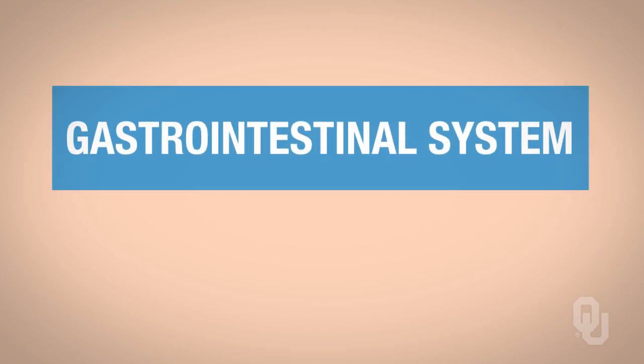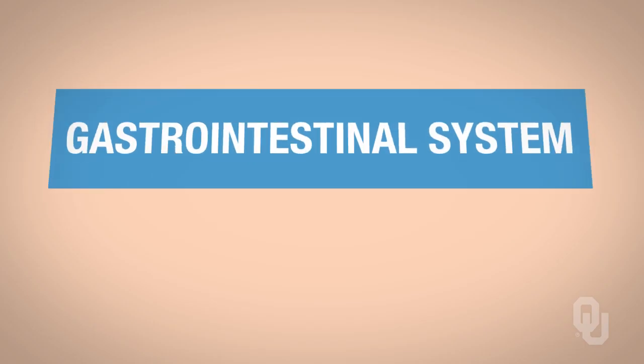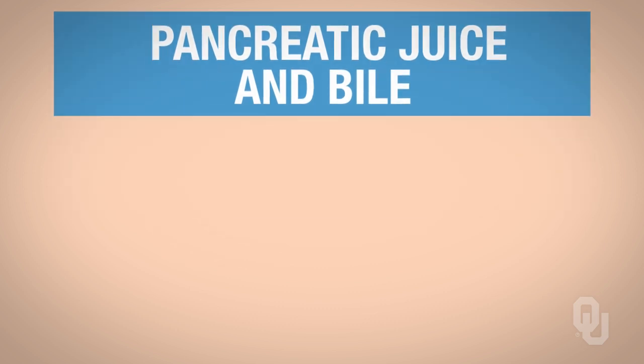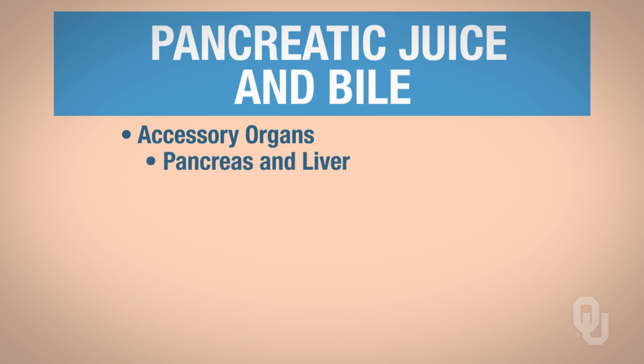In this set, we're specifically going to be focusing on pancreatic juice and the bile and what's regulating its secretion. Let's go ahead and look at synthesis and secretion of pancreatic juice and the bile. I wanted to remind you—we went back to the third week of class and talked about the accessory organs of the digestive tract. The accessory organs are the pancreas and the liver, and that's what we're focusing on here.